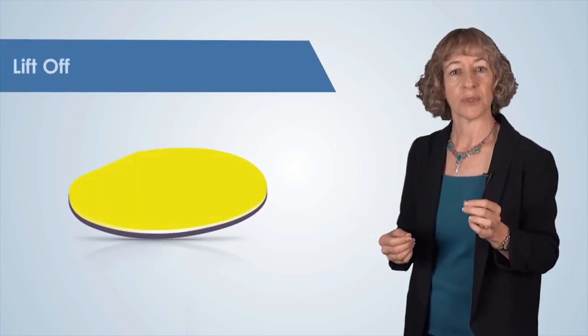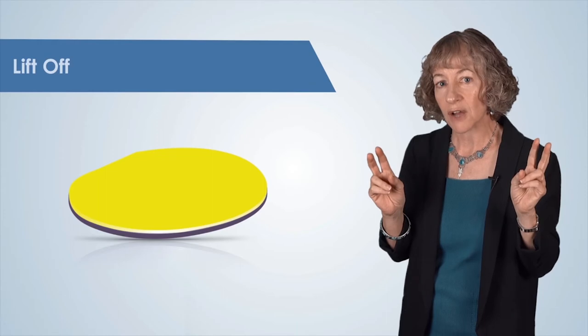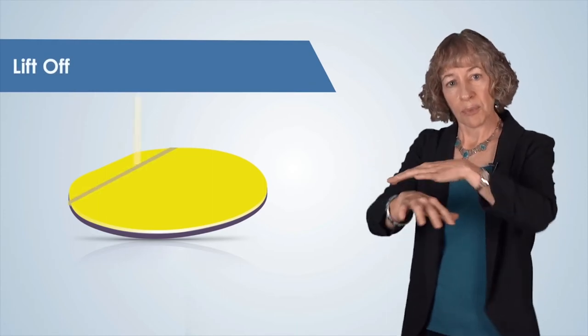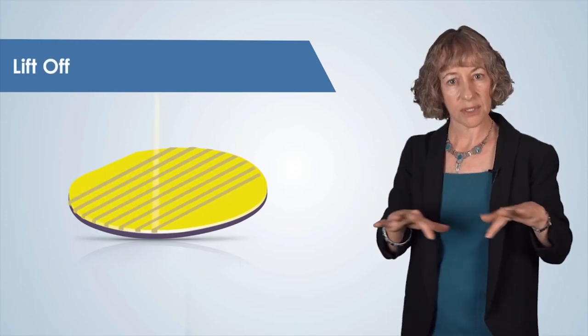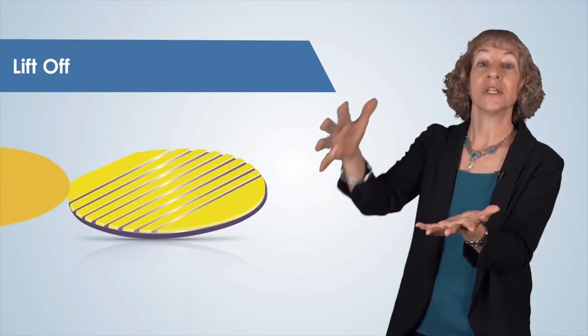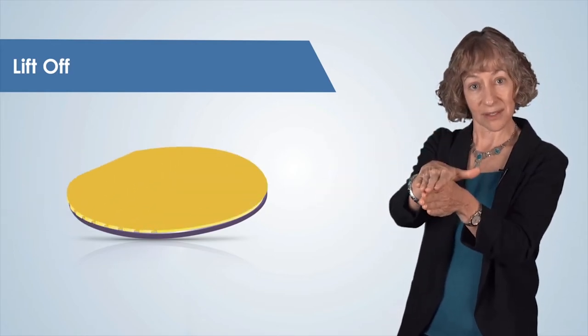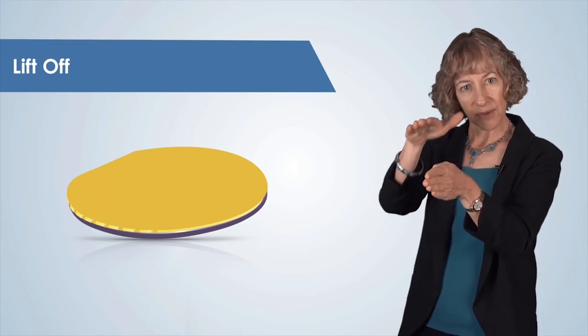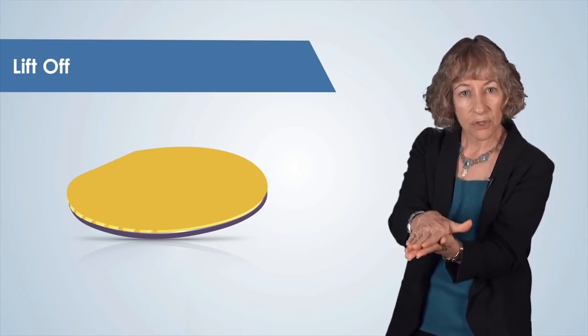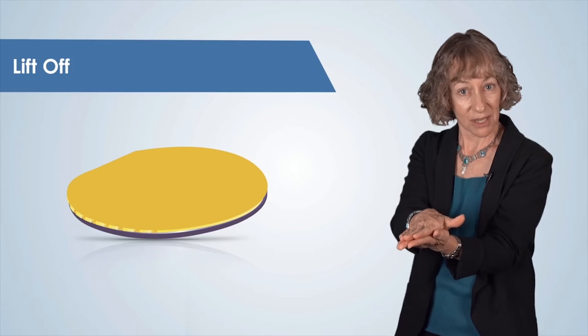The process we use with EBL is called lift-off. First, we pattern and develop the EBL resist, and then we deposit the metal layer on top of that EBL resist.